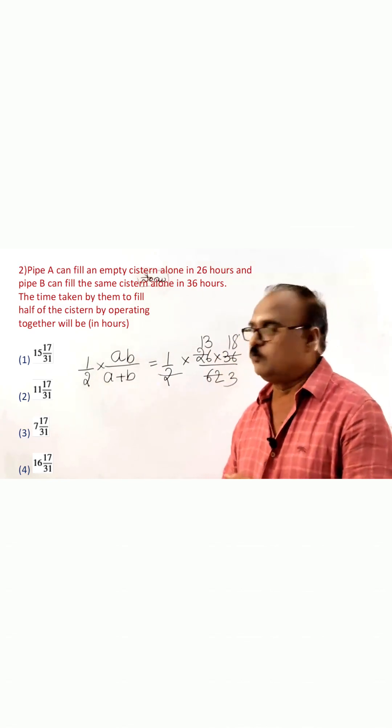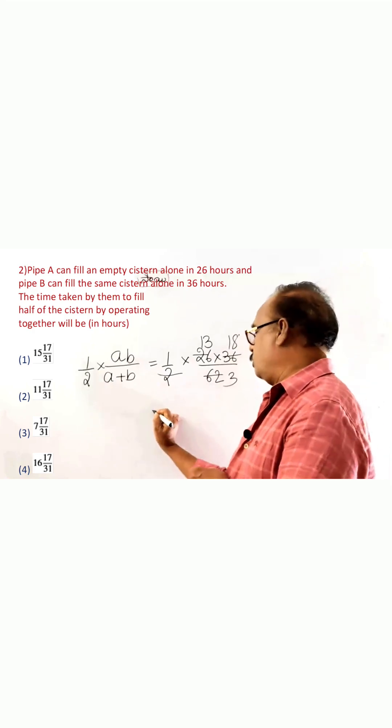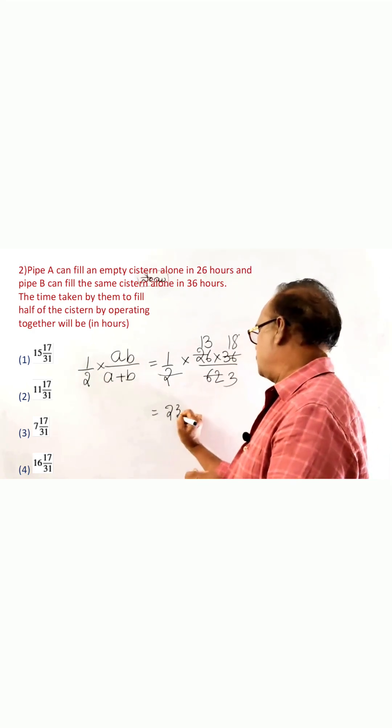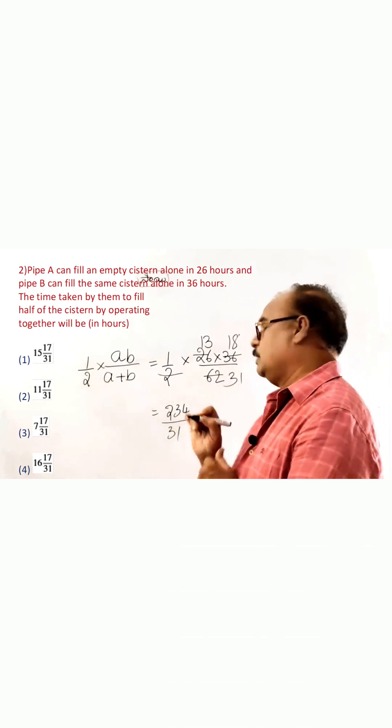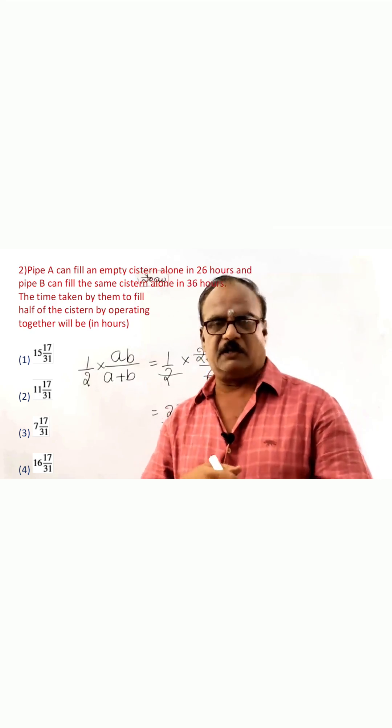18, 13's, 180 and 54, 234. 31 divided by 31, 234 divided by 31.